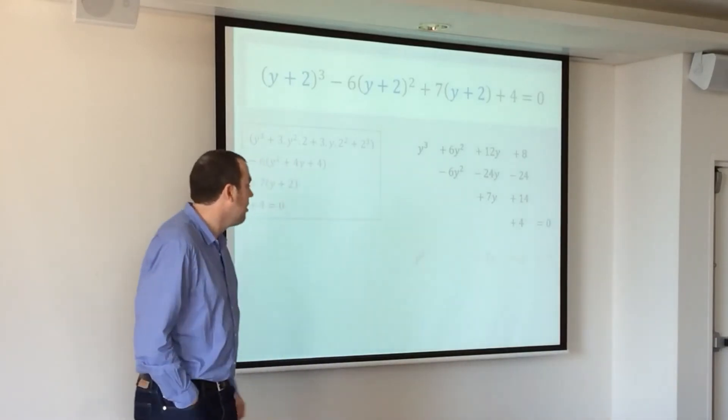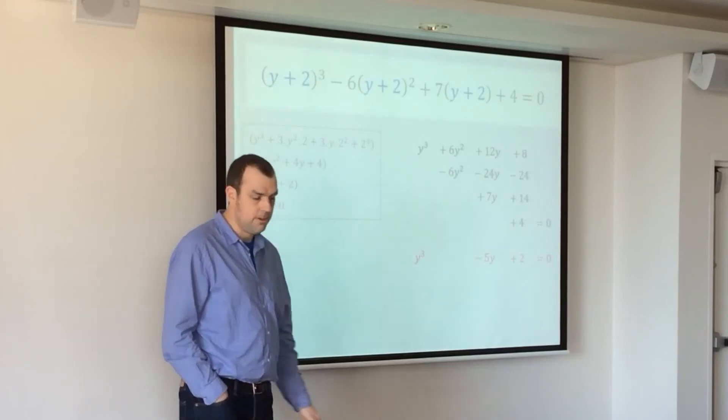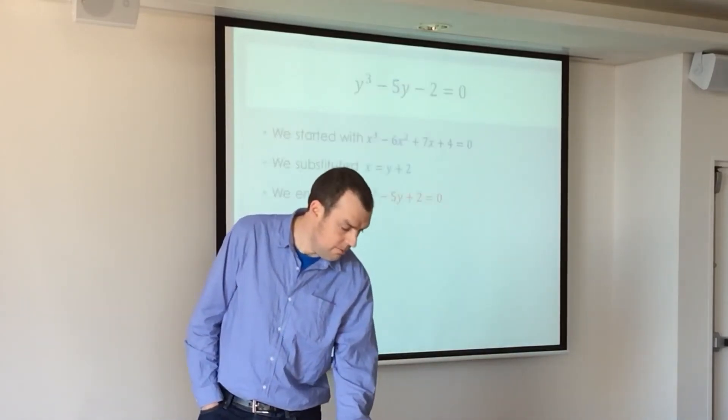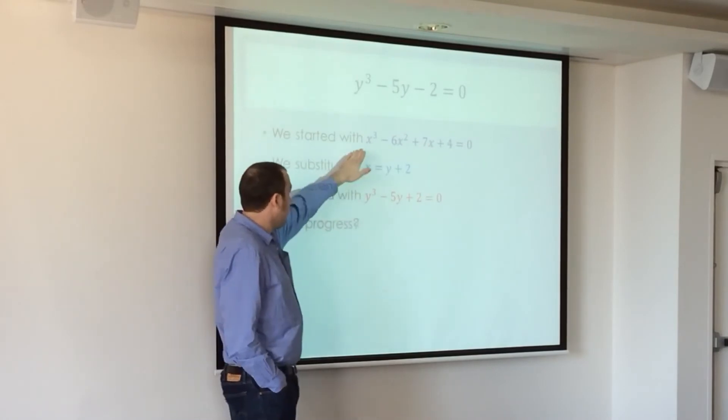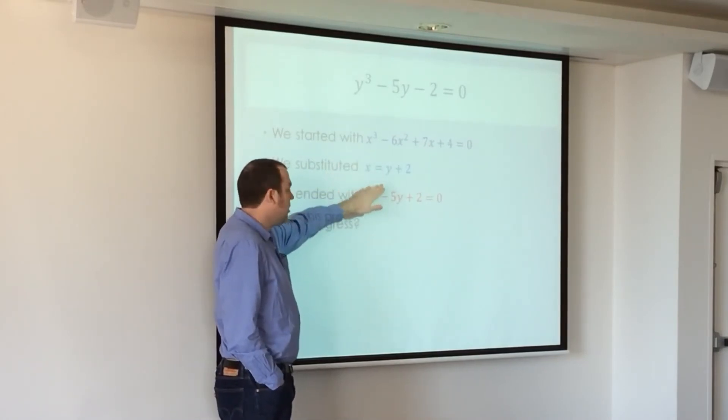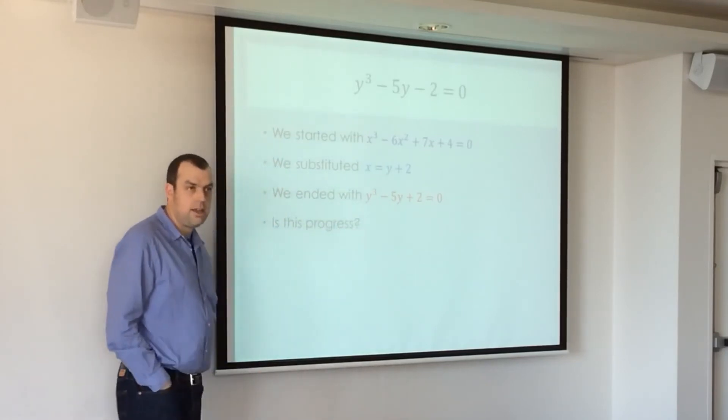So out of the mist arises the depressed cubic equation. So now we've got this. We started with that, we made a substitution, we did the expanding and simplifying, we got that. Is that any better?